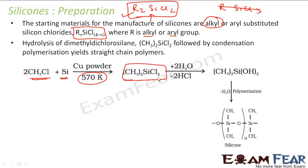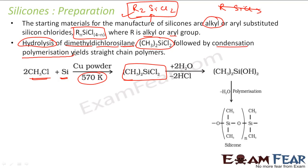The product is R2SiCl2 — specifically dimethyldichlorosilane. Once you have this compound, you do hydrolysis: you add water molecules and remove the chlorine, so instead of chlorine you get OH groups. Hydrolysis is nothing but replacing the halogen with OH. Then you do condensation polymerization.